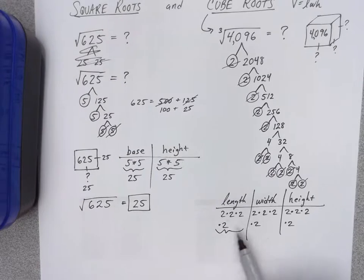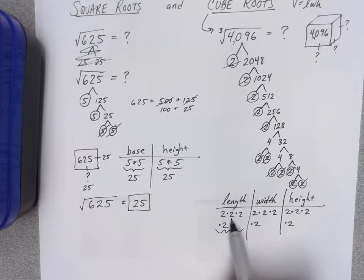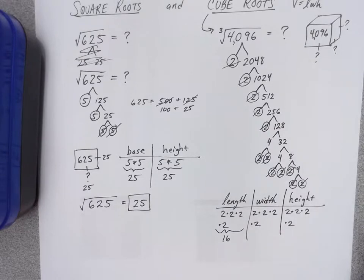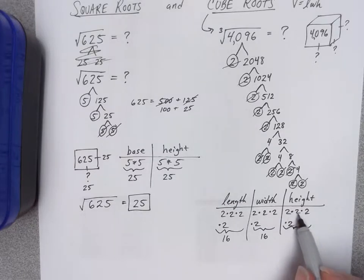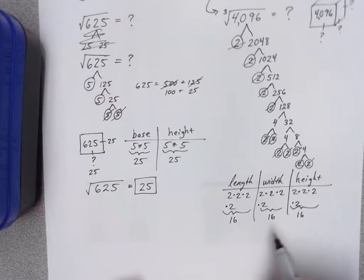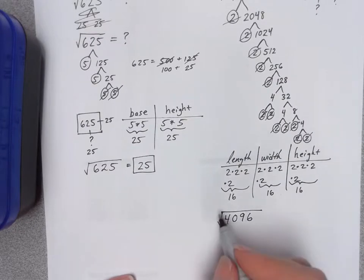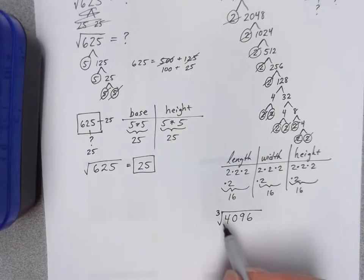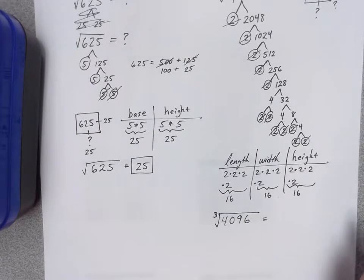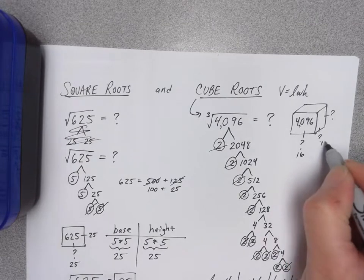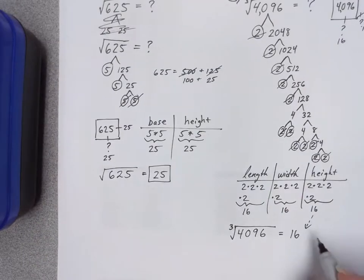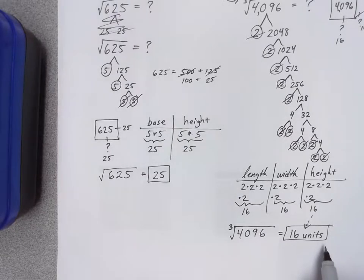Be cautious when multiplying — you don't want to just count 2, 4, 6, 8, that would be wrong. Instead: 2 times 2 is 4, and 2 times 2 again is 4, so 4 times 4 is 16. Same for the width group: 2 times 2 is 4, times 2 times 2 is 4, so 4 times 4 is 16. And the height group also has four factors of two, giving 16. You just found the length, width, and height of a cube with a volume of 4096 units cubed. The cube root equals 16 — that is the length, the width, or the height, measured in linear units.